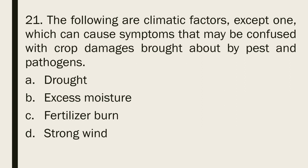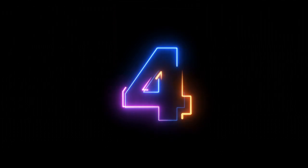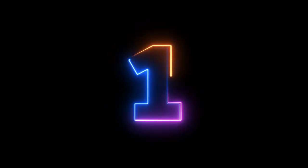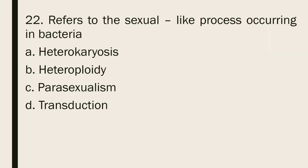Question 21: The following are climatic factors except one, which can cause symptoms that may be confused with crop damages brought about by pests and pathogens: a. Drought b. Excess moisture c. Fertilizer burn d. Strong wind. The correct answer is letter c, fertilizer burn.